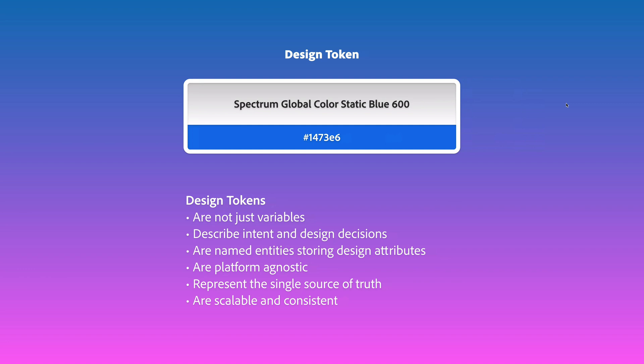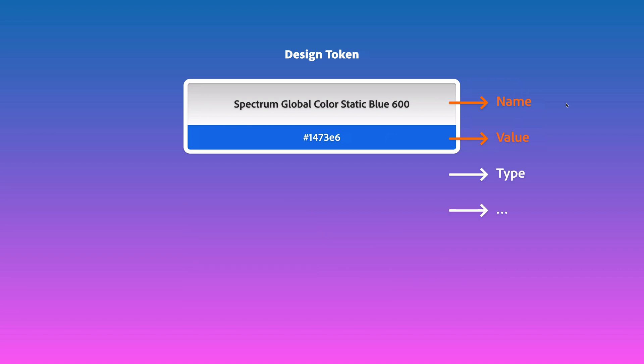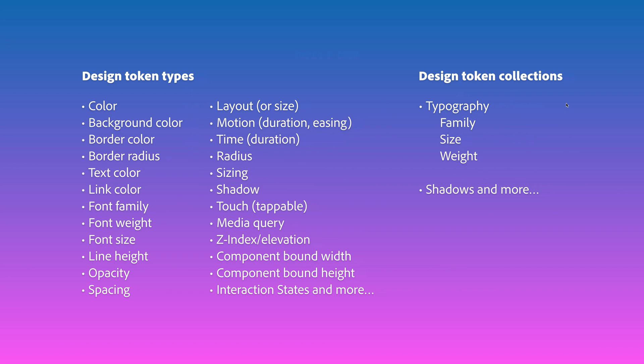Tokens have keys, values, and types. They can help design scale and be consistent. Tokens can be colors, they can be numeric like size, line height, opacity, and spacing. They can be text-based like an easing curve or a media query. They can also be boolean — like is this tappable or not, via true or false. You can also have collections of tokens; typography, for example, has family, size, and weight tokens, and shadows are another example of a collection.